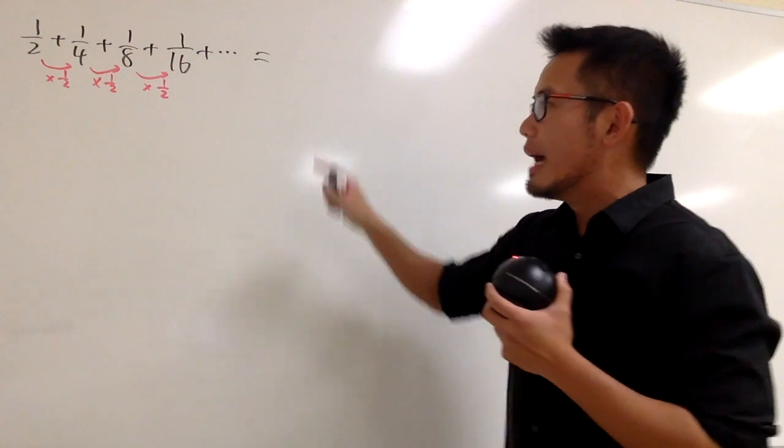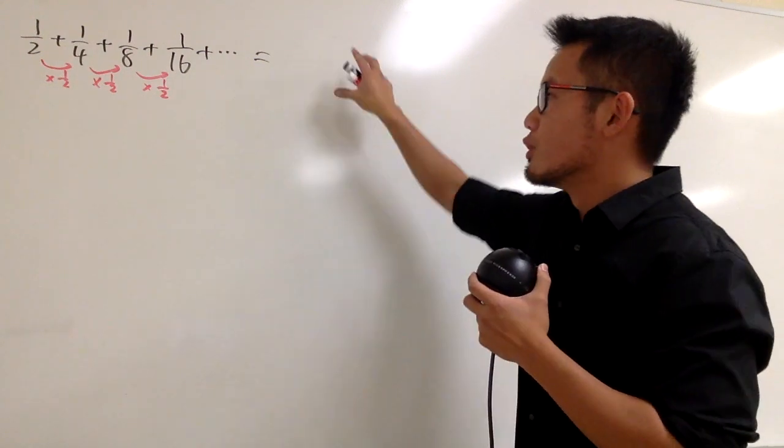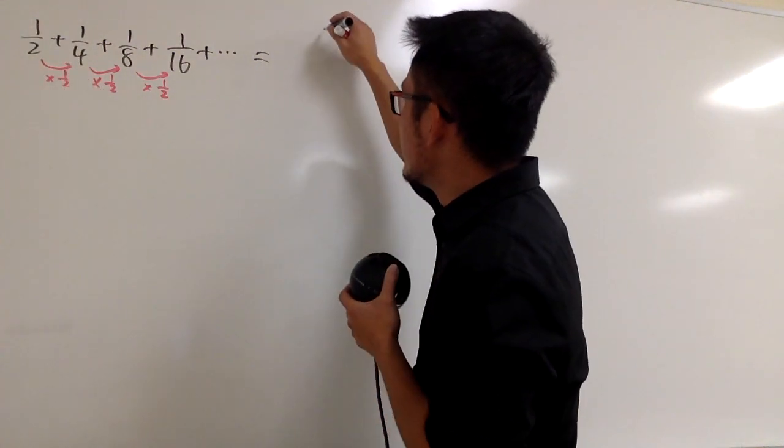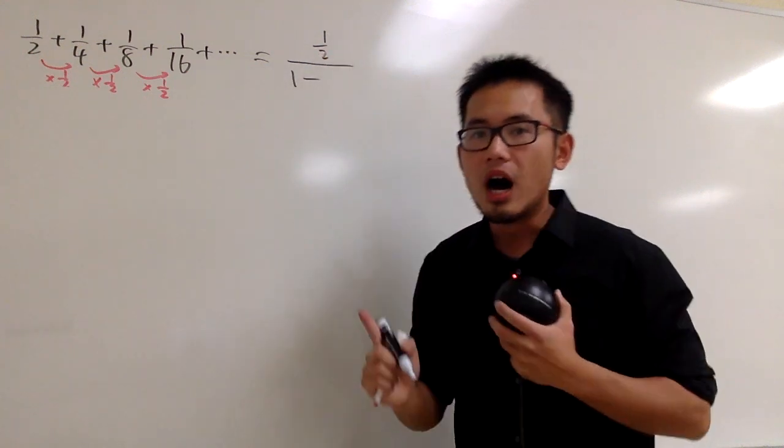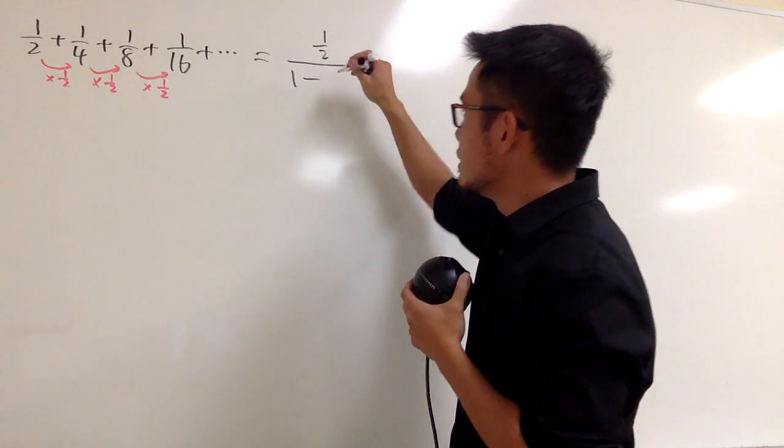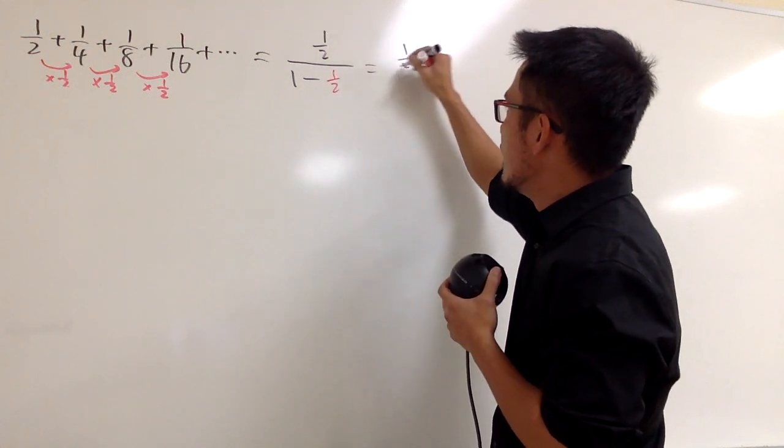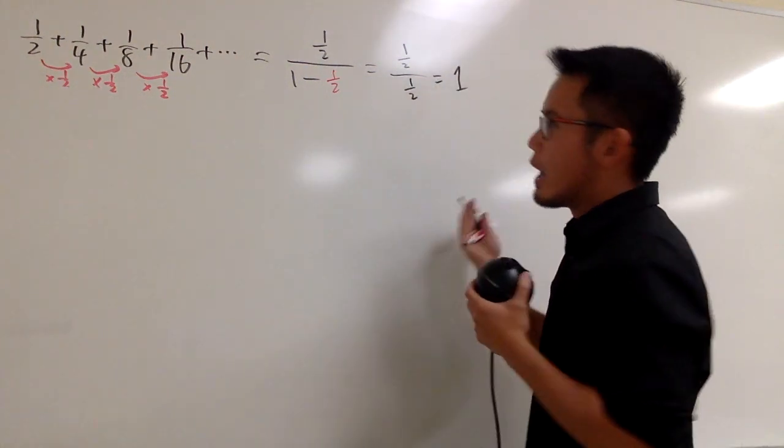We can also say that this is going to be the following: to add them up, we look at the first term, which is 1/2, and then we divide it by 1 minus r, the common ratio, which is this 1/2. So on the top, you have 1/2, and when you do 1 minus 1/2, you still have 1/2 as well. And at the end, you have 1.